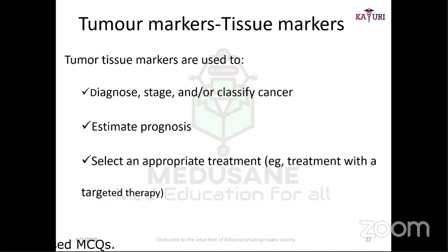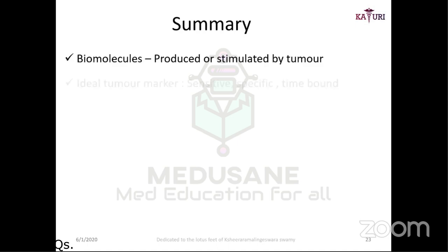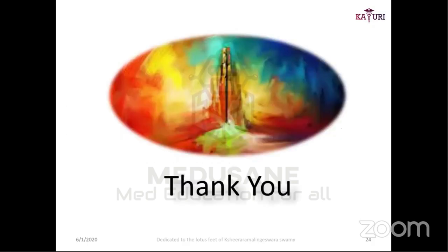In summary, tumor markers are biomolecules produced by tumor tissue, and can be hormones, enzymes, oncofetal antigens, or glycoproteins. They are organ-specific in some cases — for example, markers for liver, gallbladder, and ovary. They are classified as circulating or tissue-specific markers, and have both diagnostic and prognostic utility in the management of cancer.